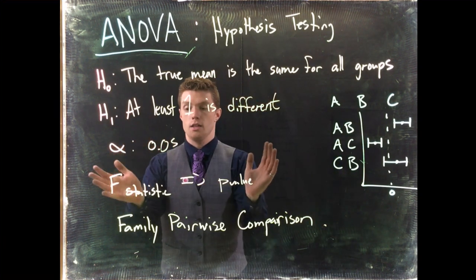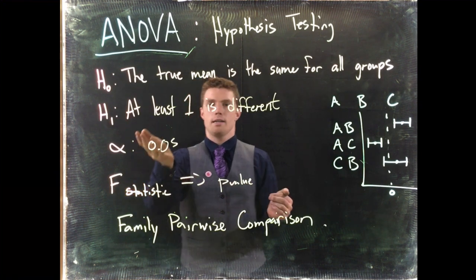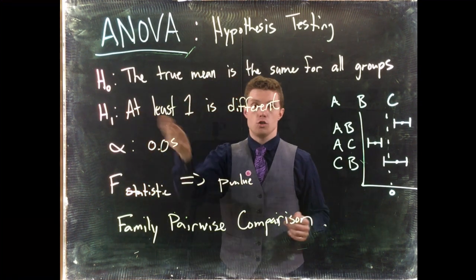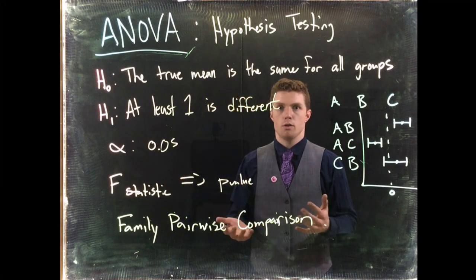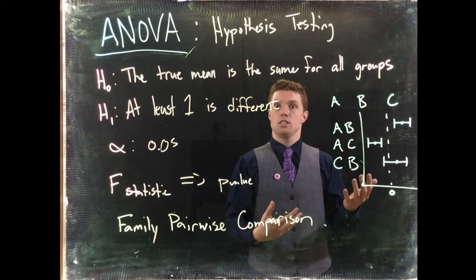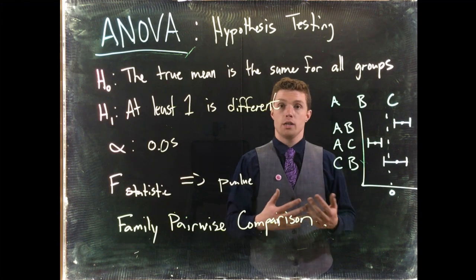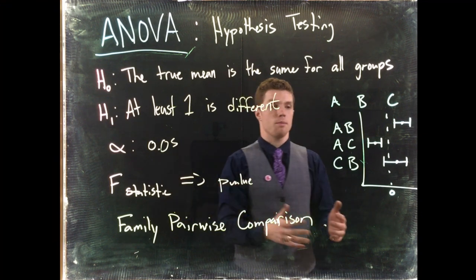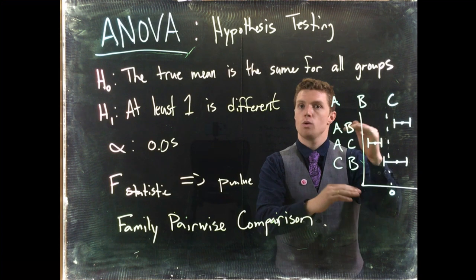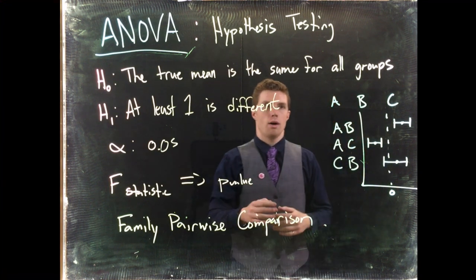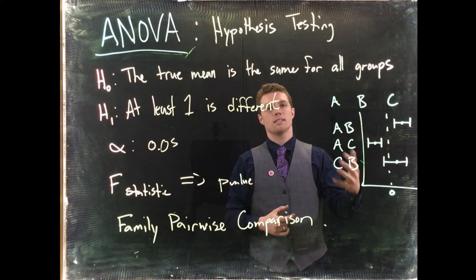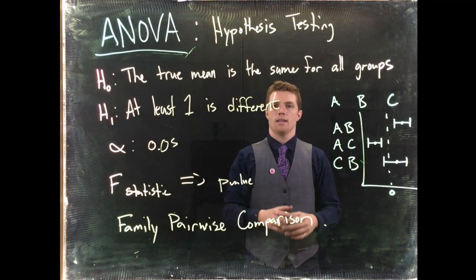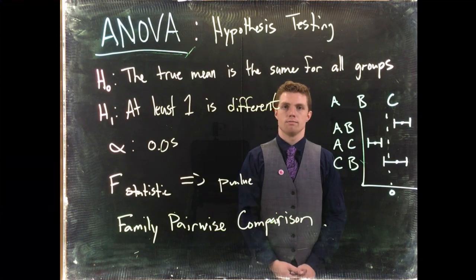So the ANOVA itself only lets us know whether or not we can show that at least one of them is different. The pairwise comparison, just like the post-hocs before, let us know how much different they were, or which one was bigger or not. Same thing, this post-hoc comparison lets us know which ones are different. And so we'll take a little bit of time also to talk about how do we actually discuss these conclusions in this ANOVA scenario.